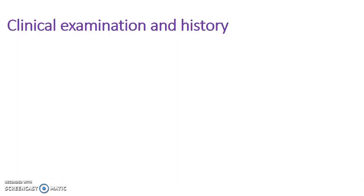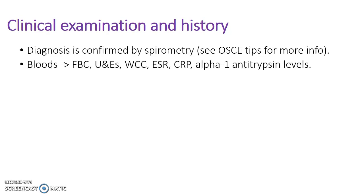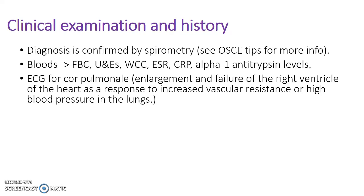Diagnosis is confirmed by spirometry. Blood investigations include full blood count, urea and electrolytes, white cell count, ESR, CRP, and alpha-1 antitrypsin levels. An ECG should be performed to look for cor pulmonale, which is common in COPD. Cor pulmonale is defined as right ventricular dilation with consequent fluid retention caused by any chronic lung disorder with pulmonary hypertension.